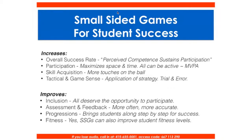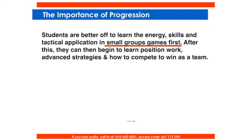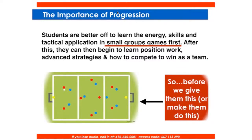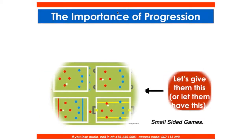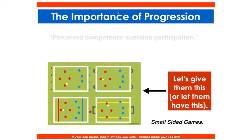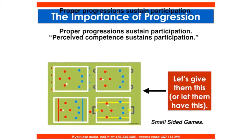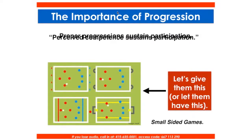The importance of progression: students are better off to learn the energy, skills, and tactical application in smaller group settings first. Then you can build in position work, advanced strategies, and how to compete and win as a team. Before we give them the big picture — like I talked about with the softball example — we need to give them these small-sided game contexts, so that perceived competence will sustain participation. Proper progressions will sustain their participation and help them feel successful.